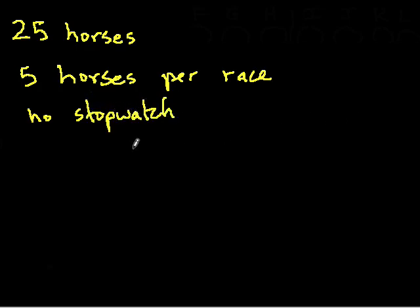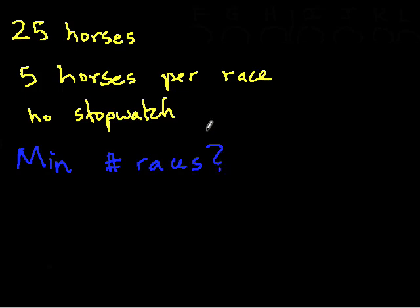So the question is: what is the minimum number of races to determine the top three? We want the top three of all 25. So that's the problem. If you have not solved this problem yet, now that you know it, try working on it.